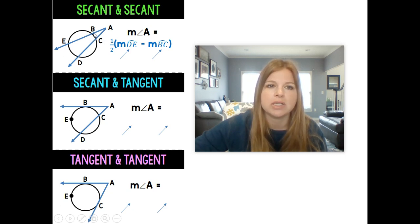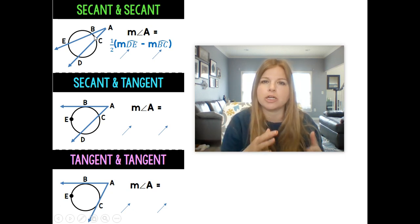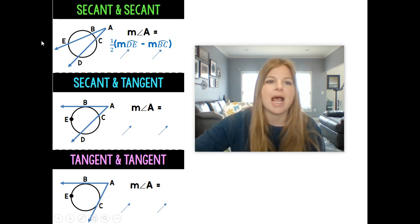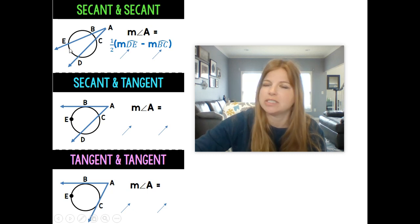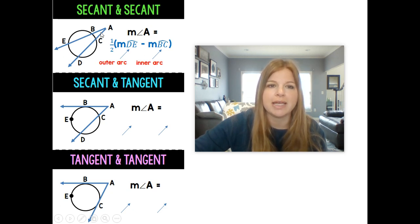Angle A intercepts the circle creating these two arcs. Arc BC, which would be the inner arc. I'm calling it the inner arc because it's closer to angle A. And then this is the outer arc. It's further away. You simply do one half of the outer arc minus the inner arc. So the measure of angle A is equal to one half of arc DE minus arc BC. That's when you have two secants.